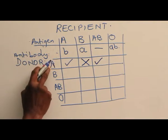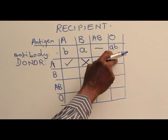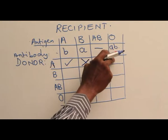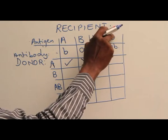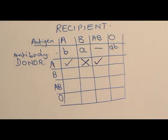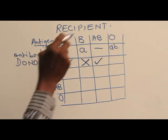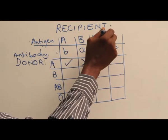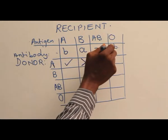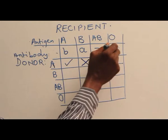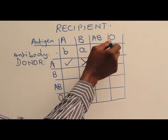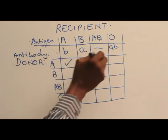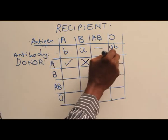This person that is having A antigen in blood, that is blood group A, cannot transfuse his blood to a patient with O. The reason is because the patient with O group has antibodies A and B. So antibody A will attack the antigen A, and the blood will be agglutinated.